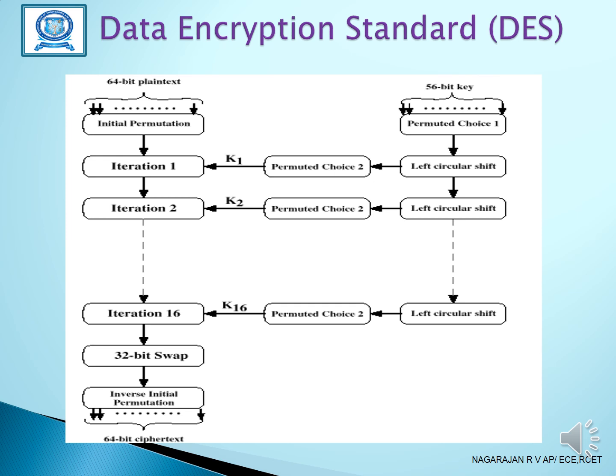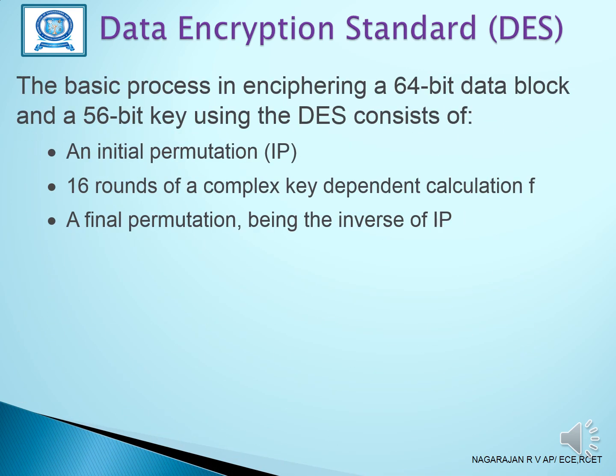The 64-bit plain text is given to the initial permutation and then to Iteration 1. A 56-bit key is given to Permuted Choice 1, then a left circular shift, then Permuted Choice 2; this key K1 is given to Iteration 1. The output of Iteration 1 is given to Iteration 2, and so on through all 16 rounds, finally producing a 64-bit cipher text via the inverse initial permutation. The basic process encrypts a 64-bit data block with a 56-bit key using an initial permutation, 16 rounds of complex key-dependent calculation, and a final permutation that is the inverse of IP.